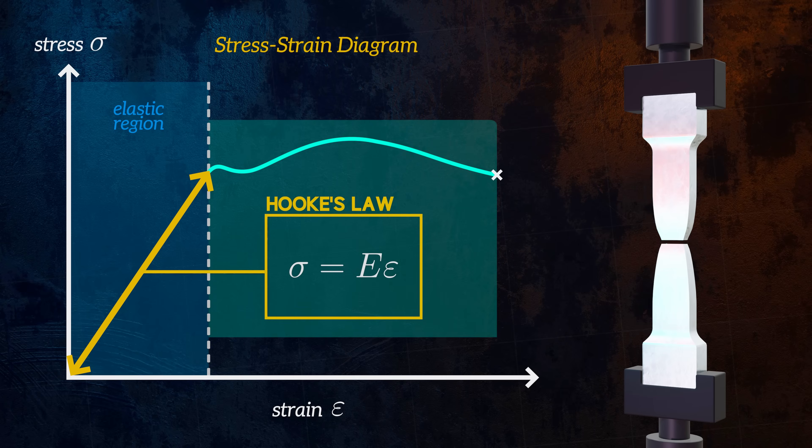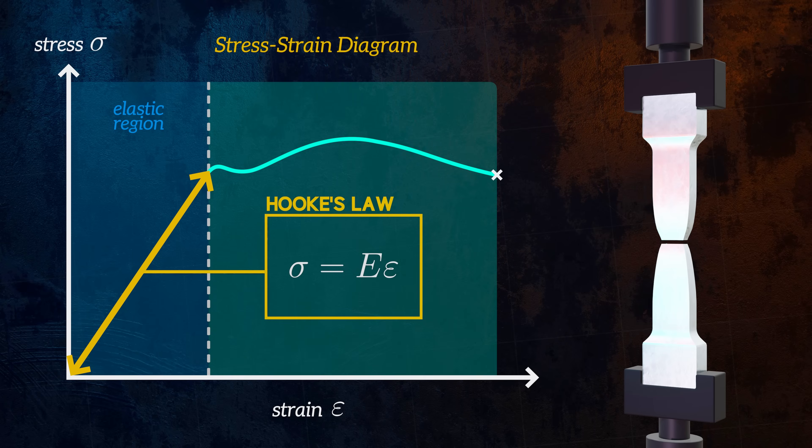For larger strains, the relationship between stress and strain is no longer linear. Deformations are not reversed when the load is removed and we have permanent plastic deformation.